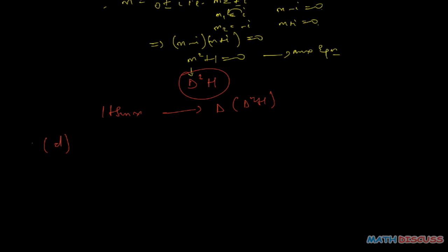We're given f(x) = 8x minus sine(x) plus 10cos(5x). This is interesting because it's like we're doing almost the same thing again and again. Looking at this, we have three different things: the first term is 8x, the next one is sine(x), and the next one is cosine(5x). To find the annihilator, I'm going to find the annihilator of each of them and then multiply all of them together.